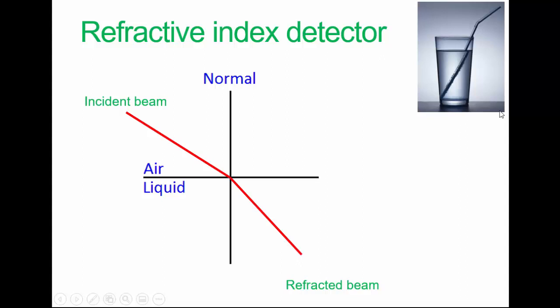Another type of detector used is refractive index. You've used refractive index probably in the past using the refractometer. So, for example, this would work with solutions of sugars in water.